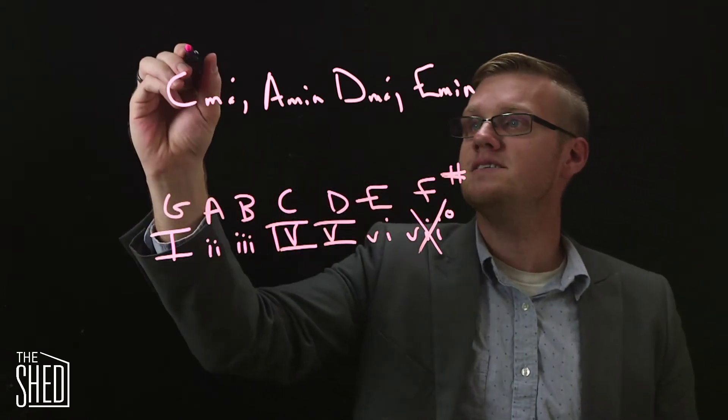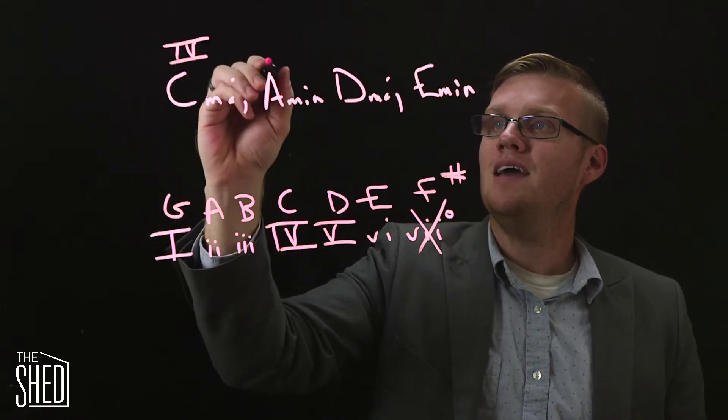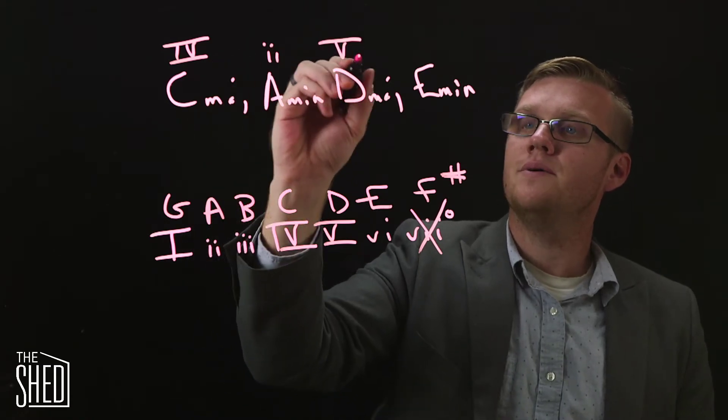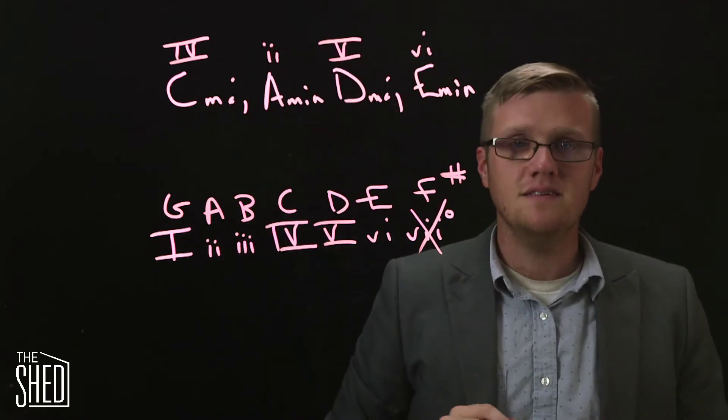That means that C is the four chord, A minor is the two chord, D is the five chord, and E minor is the sixth chord.